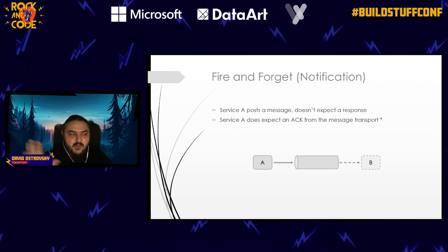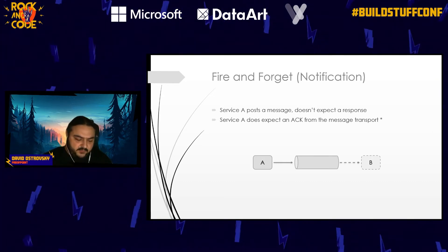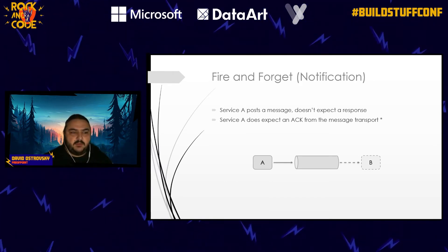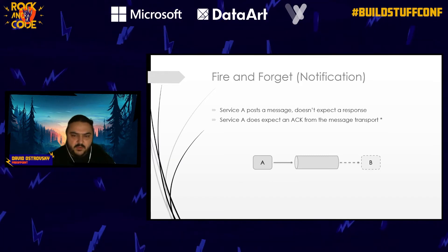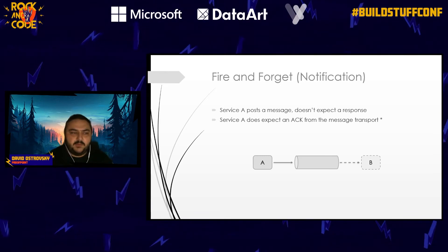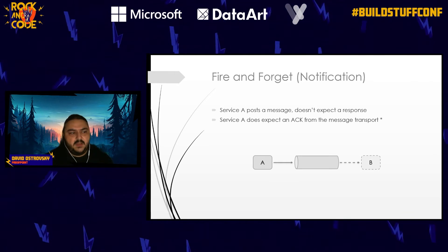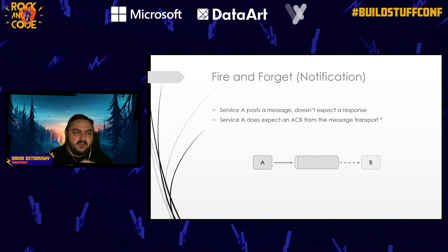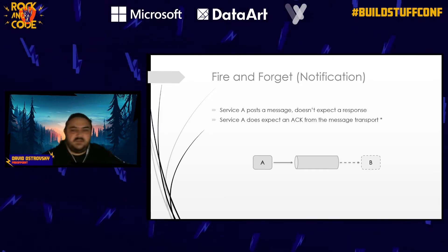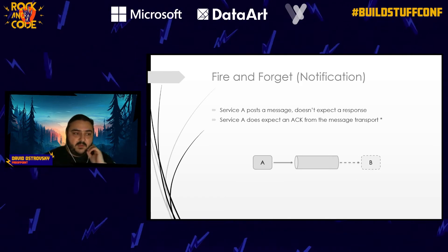At Proofpoint, we use Kafka heavily. In our cloud access security system we have 80-90 services, and of those only three have synchronous interfaces. The UI backend is synchronous because it reads data for display. Almost every service that writes data is implemented asynchronously — posting a message to Kafka and some other service picks it up later. The most common pattern is fire and forget, or notification: a service produces data to the message transport and doesn't expect a response from another service. It posts the message and gets an acknowledgement from the transport that it was persisted — it doesn't wait for a consumer on the other side to respond.